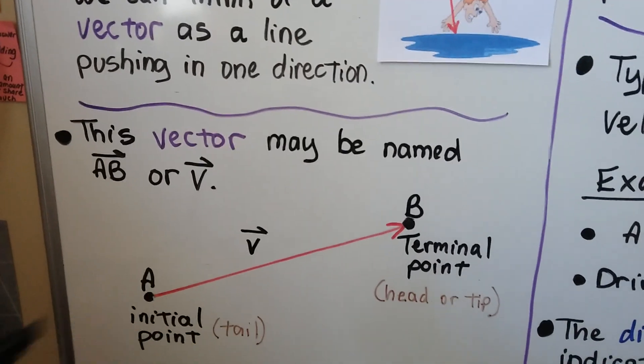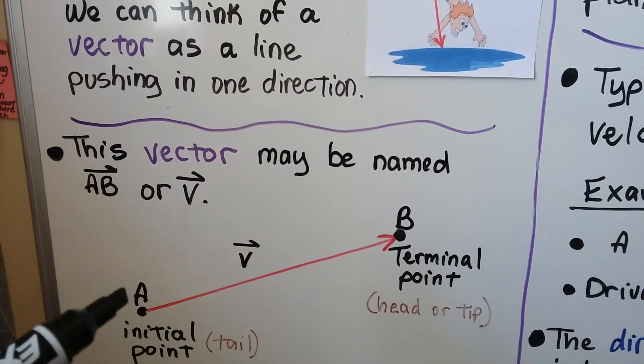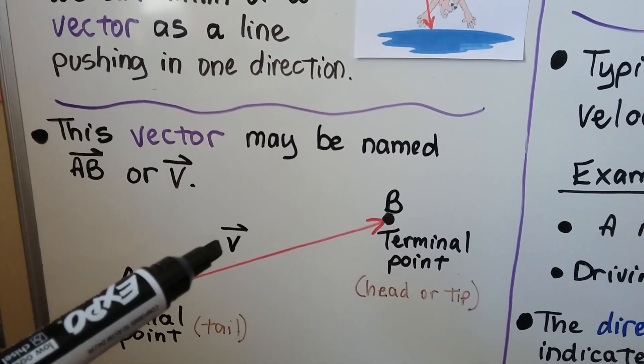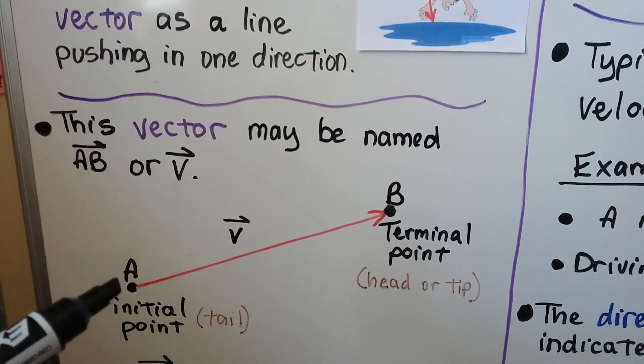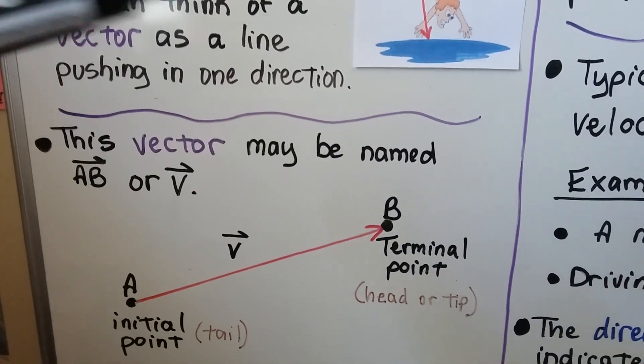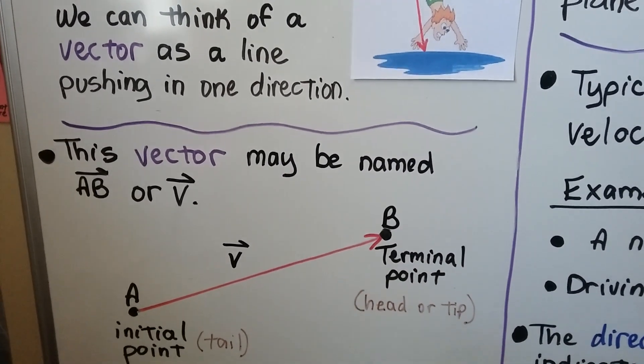And this vector right here may be named vector AB, or we can call it vector V. This A is the initial point, it's sometimes called the tail, and B would be the terminal point, and that could be called the head or tip.